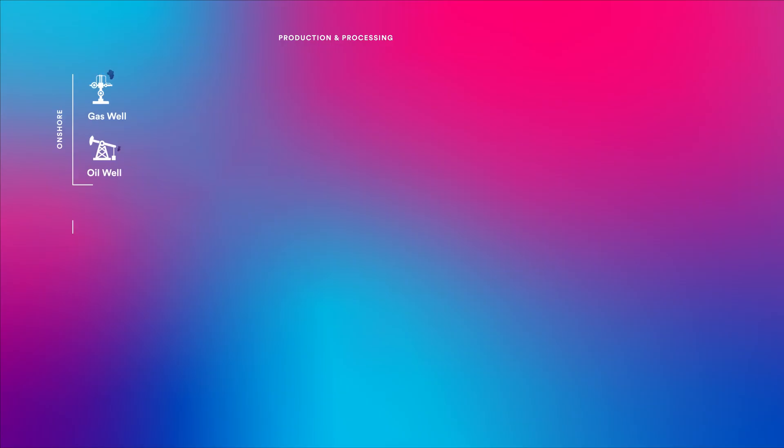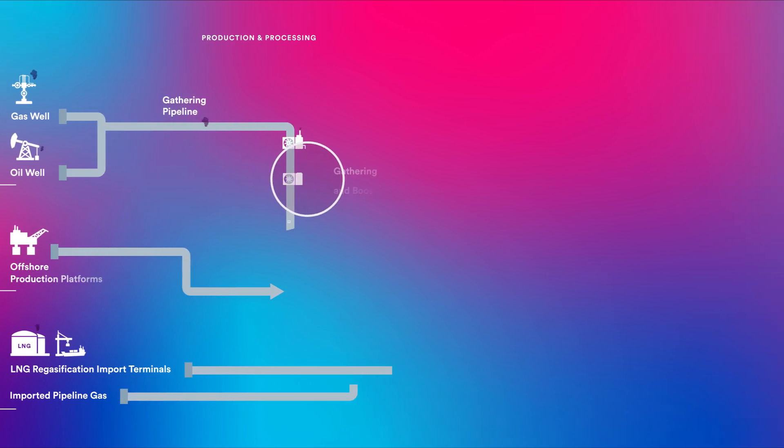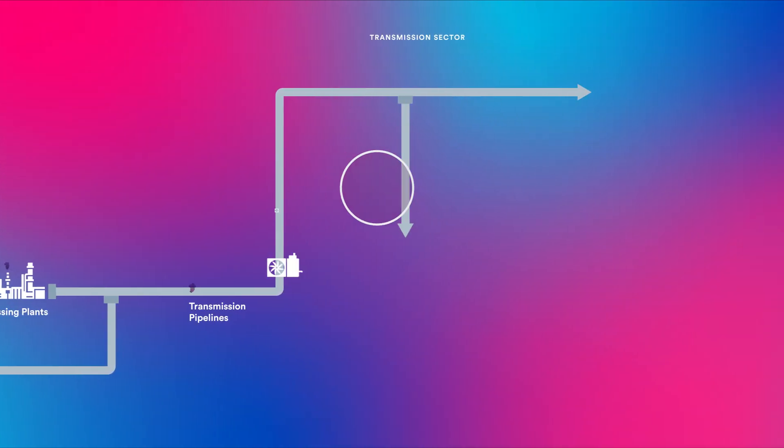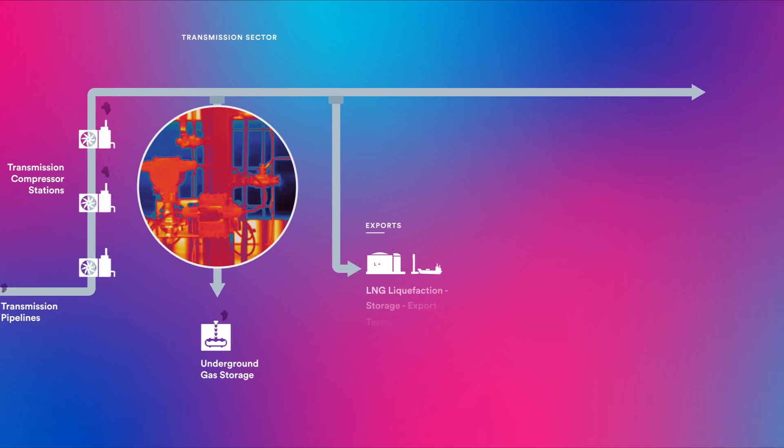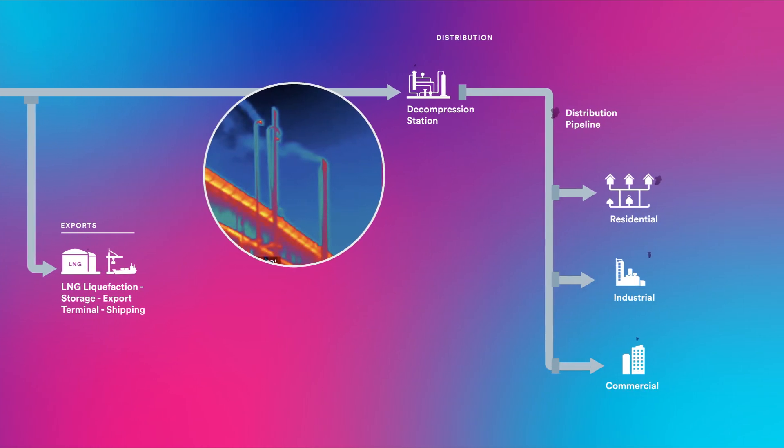When companies extract oil and gas and deliver it to customers, methane is emitted along the entire supply chain. Methane is intentionally and unintentionally released from equipment at oil and gas wells, production and processing facilities, transmission and storage sites, pipelines, power plants, city distribution grids, and even home appliances.